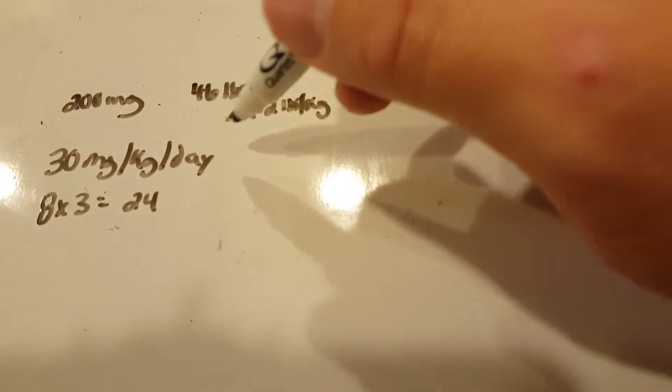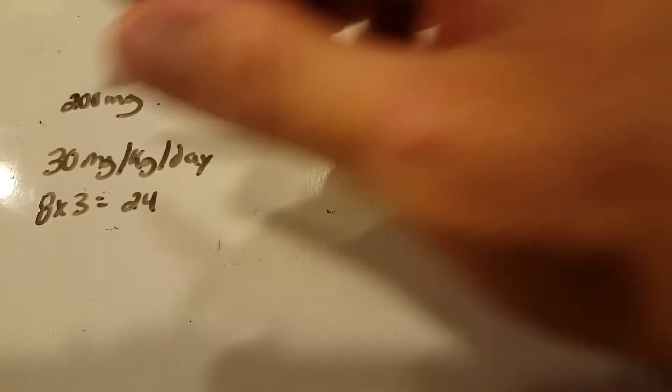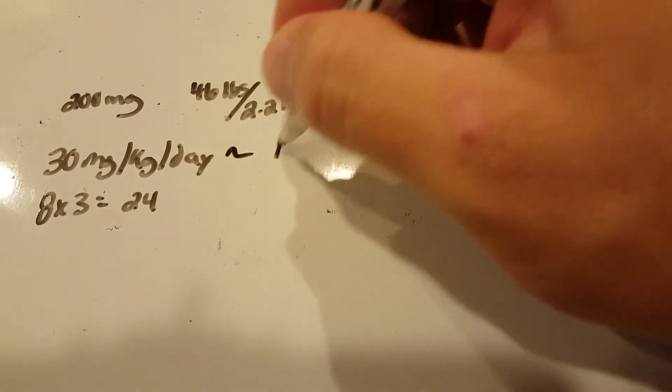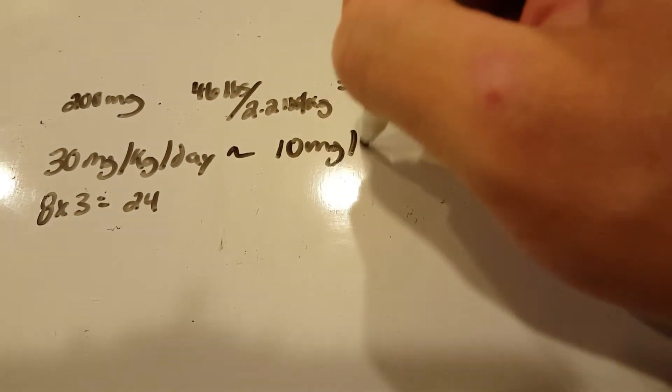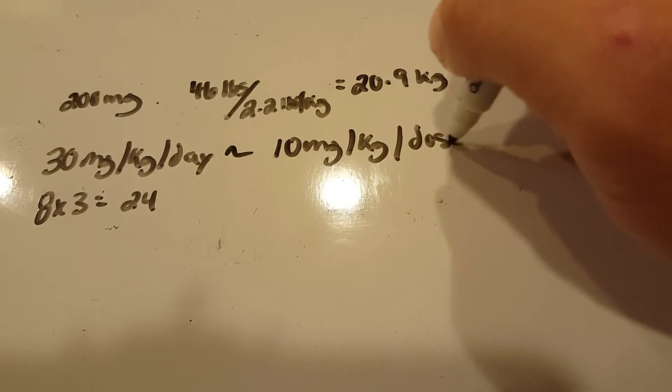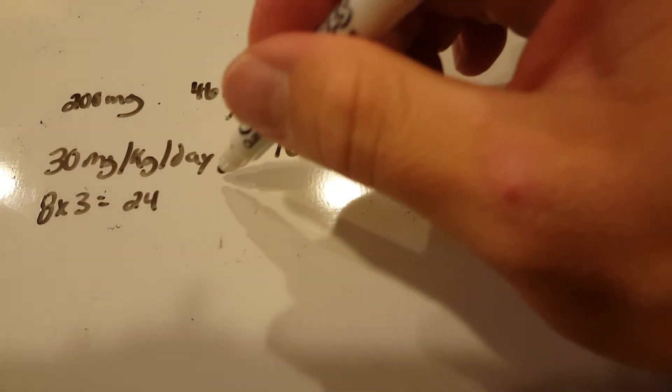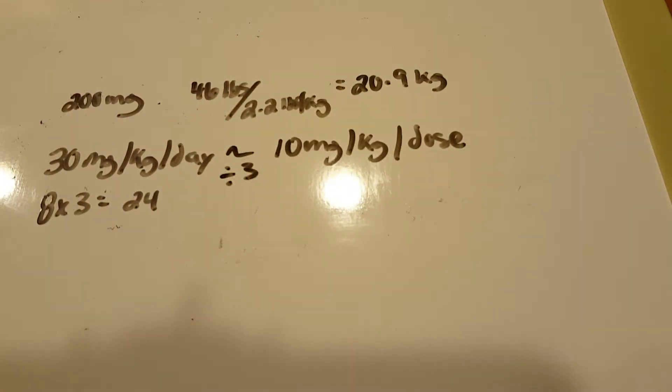which means that once I do this, I can do this a number of ways. In another video, I showed you dividing by three at the end. You can actually divide by three now, and you can convert this to being 10 milligrams per kilogram per dose just by dividing by three. So all I did was divide by three.